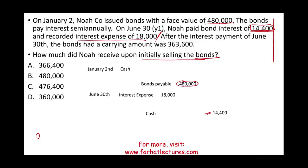What do we know about this bond? We are dealing with a discount bond. How do I know this? Because I recorded interest expense of more than what I paid in cash — that happens when the bond was issued at a discount. After the interest payment of June 30th, the bond had a carrying value of $363,600. This confirms that the bond was issued at a discount, because the carrying value is below the face value. A carrying value below face value tells you you are dealing with a discount bond.